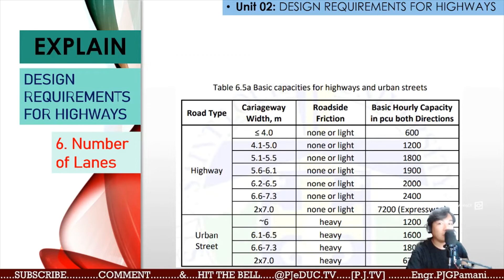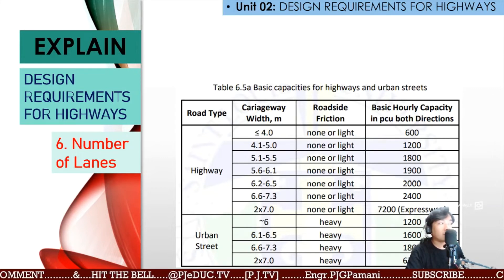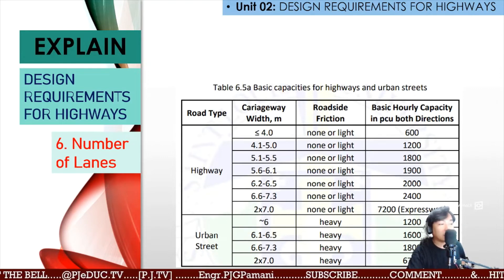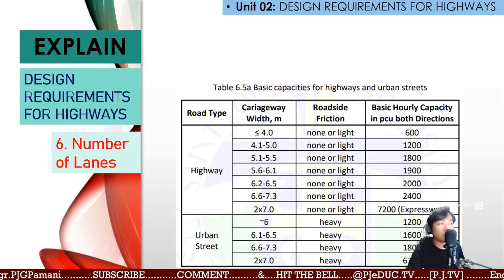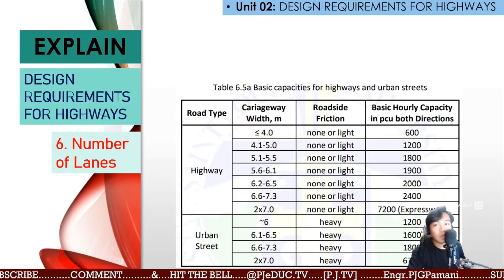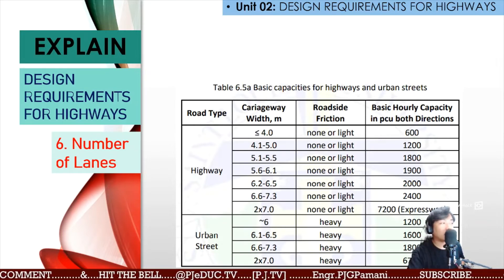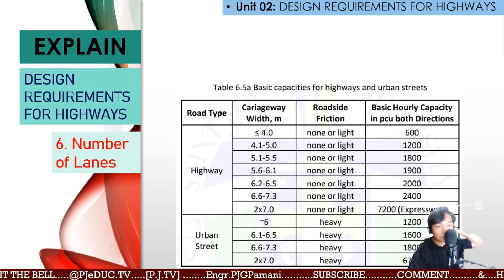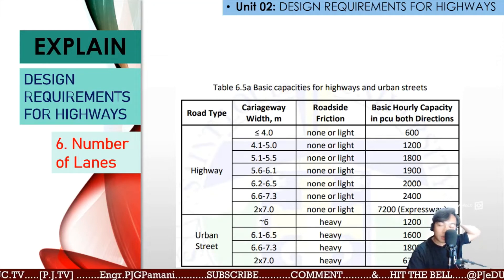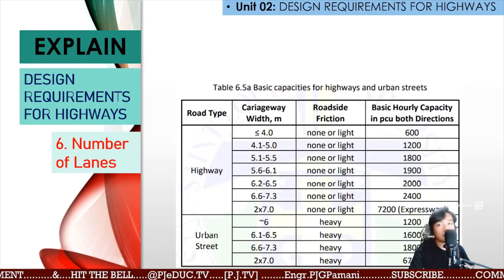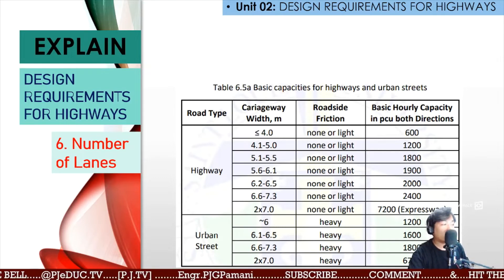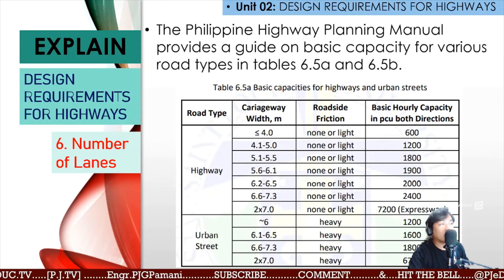Using Table 6.5a, these are the basic capacities for highways on urban streets. For example, if a highway carriageway width is less than or equal to 4 meters with roadside friction of none or light, the basic hourly capacity — PCU (Passenger Car Unit), both directions — is 600 PCU. The Philippine Highway Planning Manual provides the guide on basic capacity for various configurations.